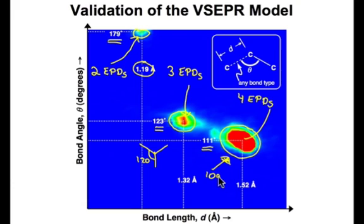we see from this data that there's a correlation between the number of electron pair domains, 2, 3, or 4, and geometry: linear, trigonal planar, or tetrahedral.